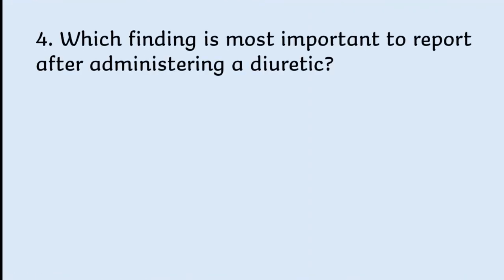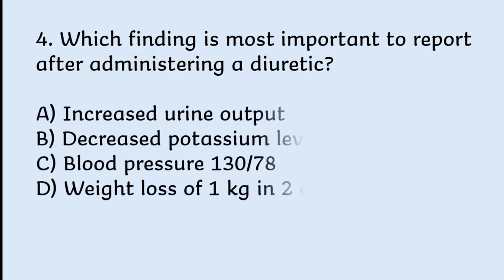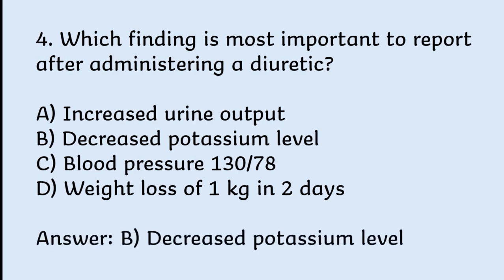Which finding is most important to report after administering a diuretic? Options: increased urine output, decreased potassium level, blood pressure 130 over 78, weight loss of 1 kg in 2 days. Correct answer is decreased potassium level.